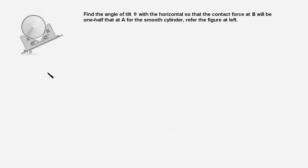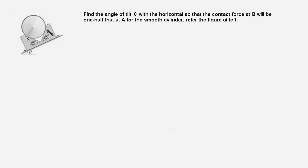In this problem, we have a smooth cylinder lying in a V-shaped channel. The channel base itself is tilted at an angle theta with the horizontal, and we have to find the angle theta for which the reaction force at B would be half of the reaction force acting at point A of the cylinder.